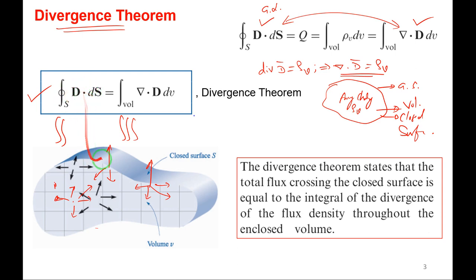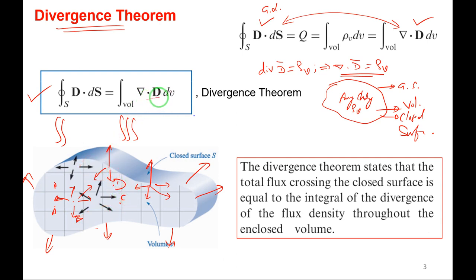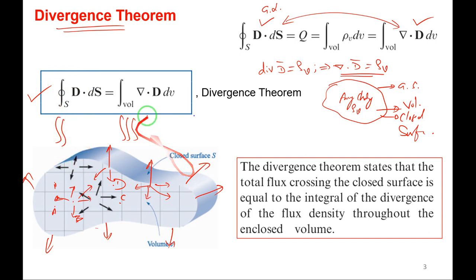The divergence theorem states: the total amount of flux lines leaving the closed surface — normal everywhere: front, back, everywhere — is equal to the integral of the divergence of the electric flux density at each and every point (A, B, C) within the enclosed volume. Integrating the spreading nature throughout the entire volume equals the total flux leaving the closed surface.